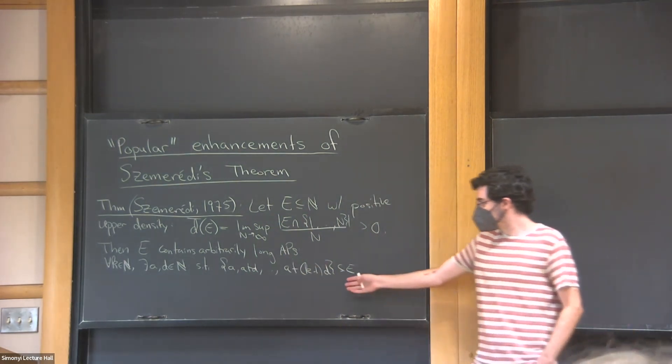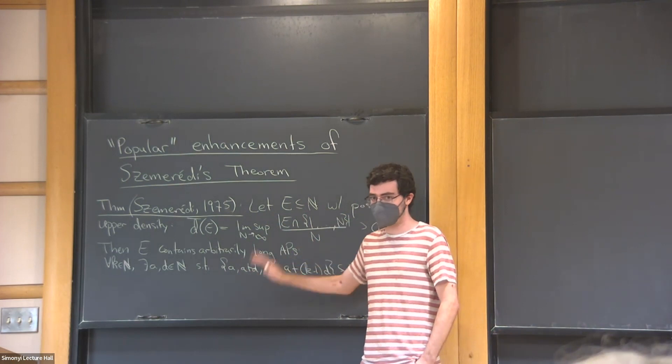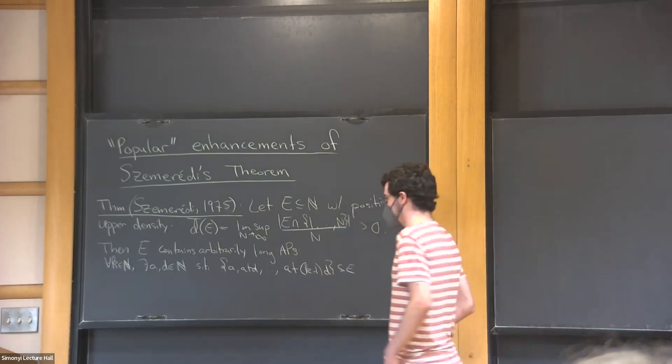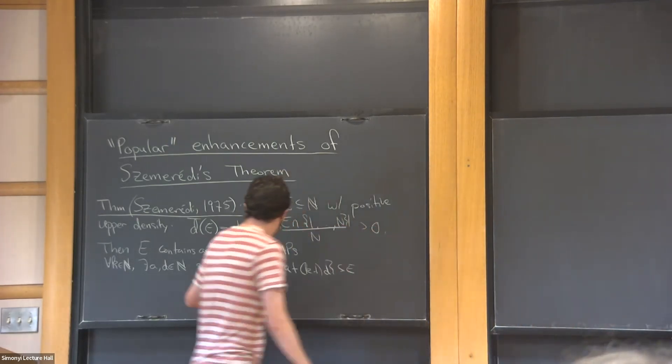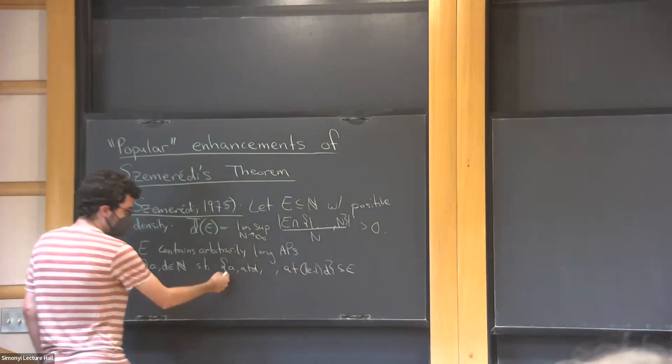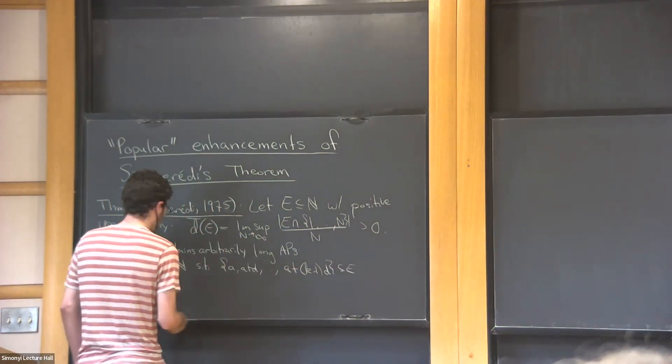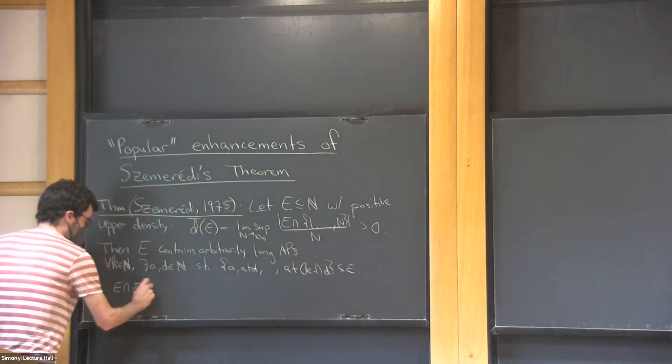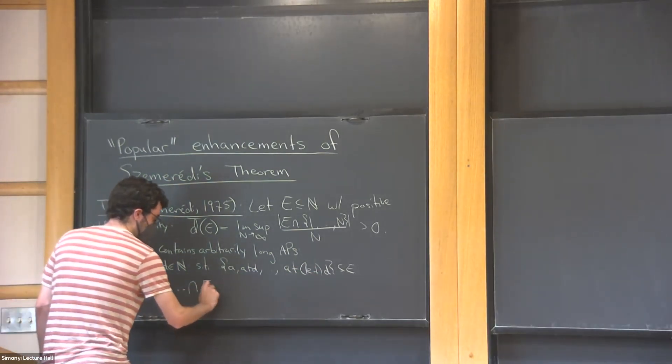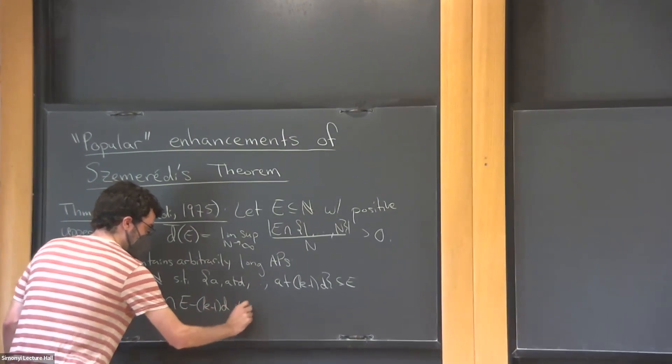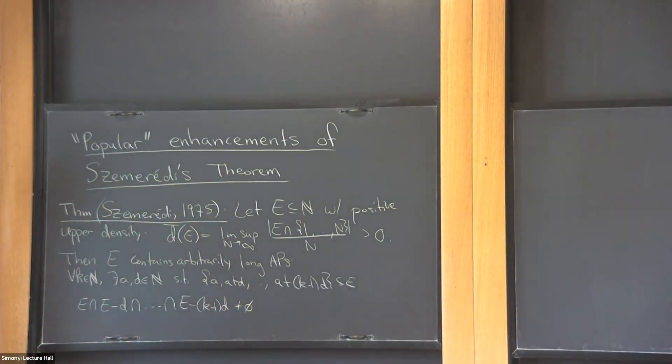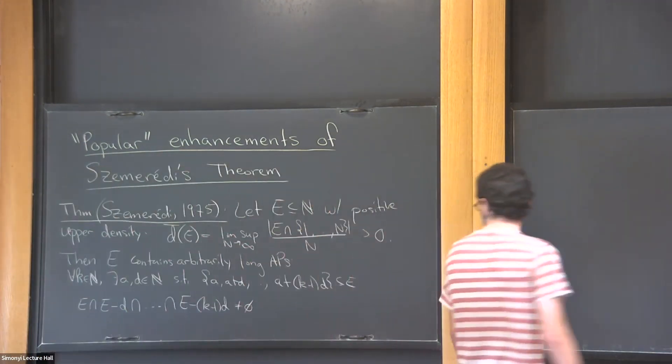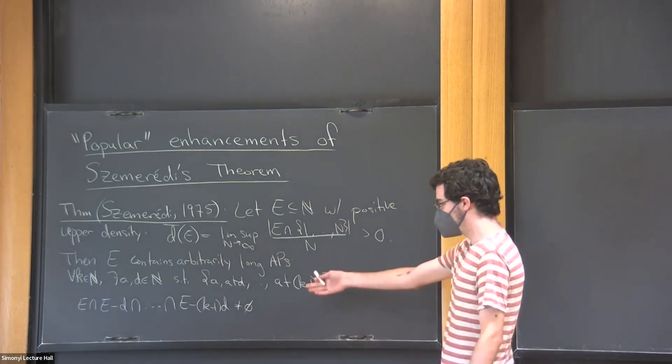Okay, but the original proof of this is very technical, very intricate combinatorics. I'm not good at that. I do dynamics. So how can we interpret this dynamically? Let's reinterpret this last line here. So I want some point A, A is in E, A plus D is in E, and so on. So really A is going to be in the intersection of E, E minus D, and so on. So I just need to find some D so that this thing is nonempty. And now this looks like something that a dynamicist can maybe deal with, but we need some translation because there's no dynamics here.